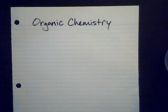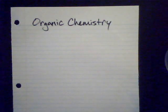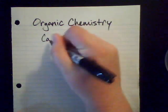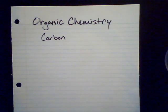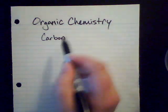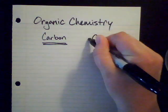Hi guys. Today I'm going to talk about organic chemistry. Organic chemistry is a field of chemistry that has a lifetime's worth of molecules to study, but we're just going to scratch the surface. Today we're going to talk about the simplest of the organic molecules. Organic chemistry is built around the element of carbon — there are 118 elements on the periodic table, and there's an entire branch of chemistry that's all about carbon.